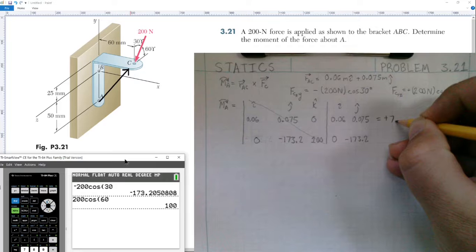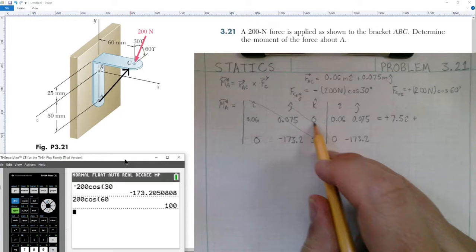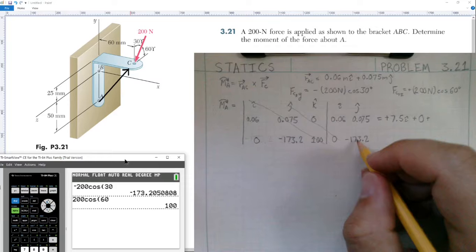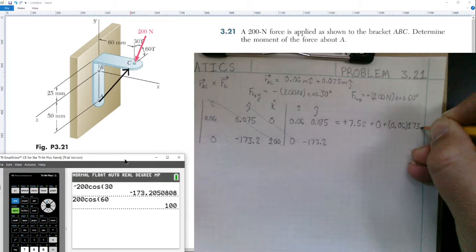Then we're going to also add. This would be a zero, and we'll add 0.06 times this negative 173.2 times k-hat. So 0.06 times 173.2 in the k-hat direction.